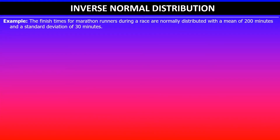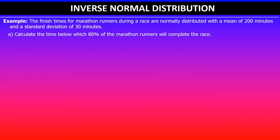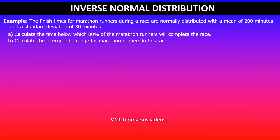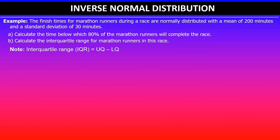In this example, the finish times for marathon runners during a race are normally distributed with a mean of 200 minutes and a standard deviation of 30 minutes. I've already done part A in my previous video, so in this video I'll be looking at part B, which says: calculate the interquartile range for marathon runners in this race. Note that the interquartile range is given by upper quartile minus the lower quartile.